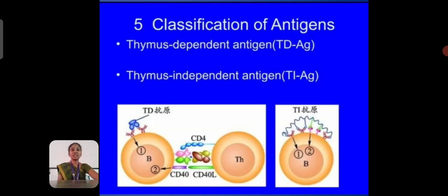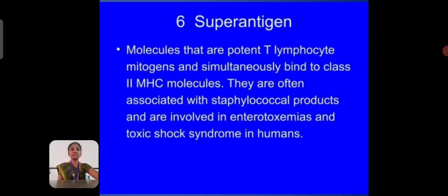There are five classifications of antigen. The first is thymus-dependent antigen, or Td antigen. The second is thymus-independent antigen, or Ti antigen. The third is superantigen — molecules that produce T lymphocyte mitogenesis or stimulately bind the class 2 MHC molecule. Superantigens are often associated with staphylococcal products and are involved in endotoxicosis and toxic shock syndrome in humans.